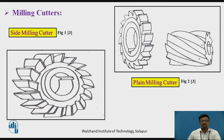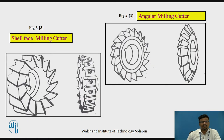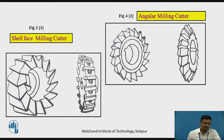For the recap of milling cutters: there is a plain milling cutter, where the cutting teeth are at the periphery. In the case of a side milling cutter, the cutting teeth are on the sides as well as the periphery, so milling can be done on both sides. For the shell face milling cutter, you can use it when you want to provide a face milling operation on a flat surface. For angular cuts, grooves, or slots, you can use the angular milling cutter.